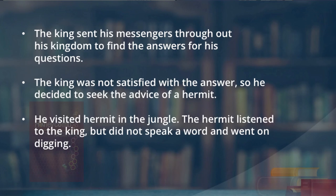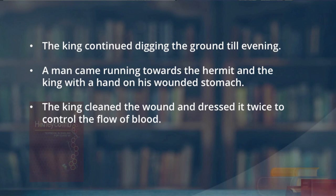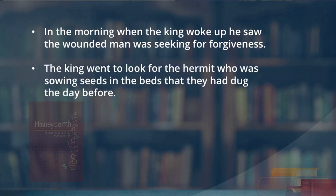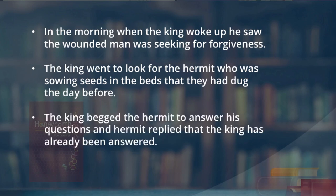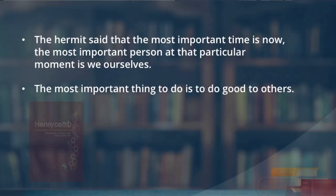The hermit listened to the king but did not speak a word and went on digging. The king offered to help him and continued digging the ground till evening. A man came running towards them with a wound on his stomach. The king cleaned the wound and dressed it twice to control the flow of blood. In the morning, the king woke up and saw the wounded man was seeking forgiveness. The king went to find the hermit, who was sowing seeds in the beds they had dug the day before. The hermit replied that the king's questions had already been answered: the most important time is now, the most important person at a particular moment is those we are with, and the most important thing to do is to do good to others.